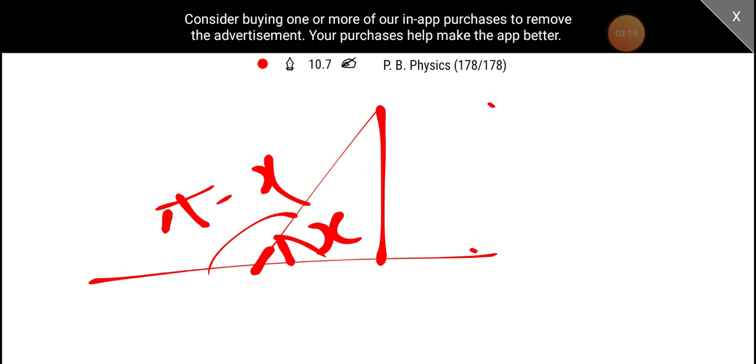Now I will see sin of x and sin of pi by 2 minus x is equal to x.